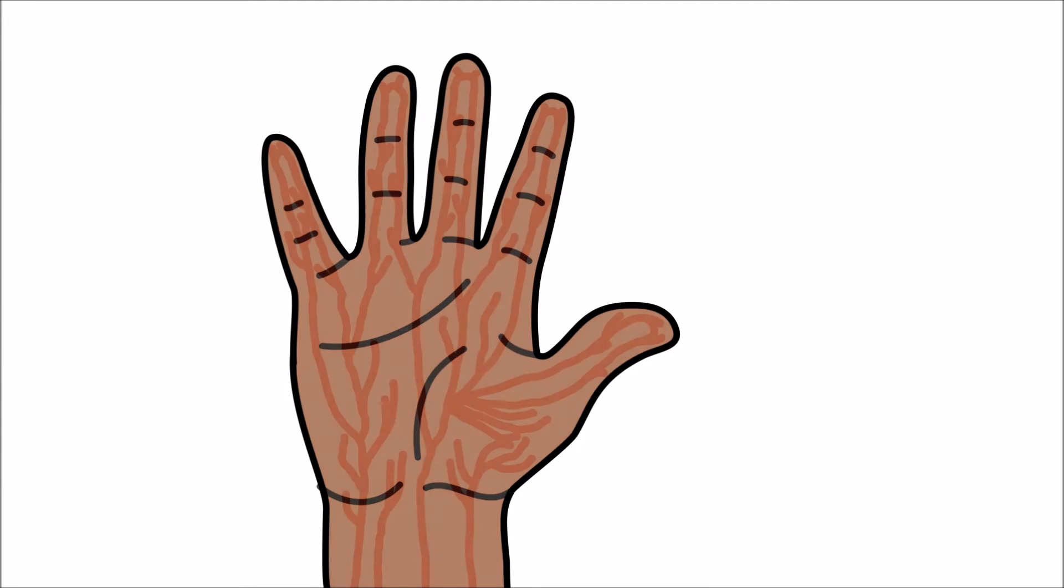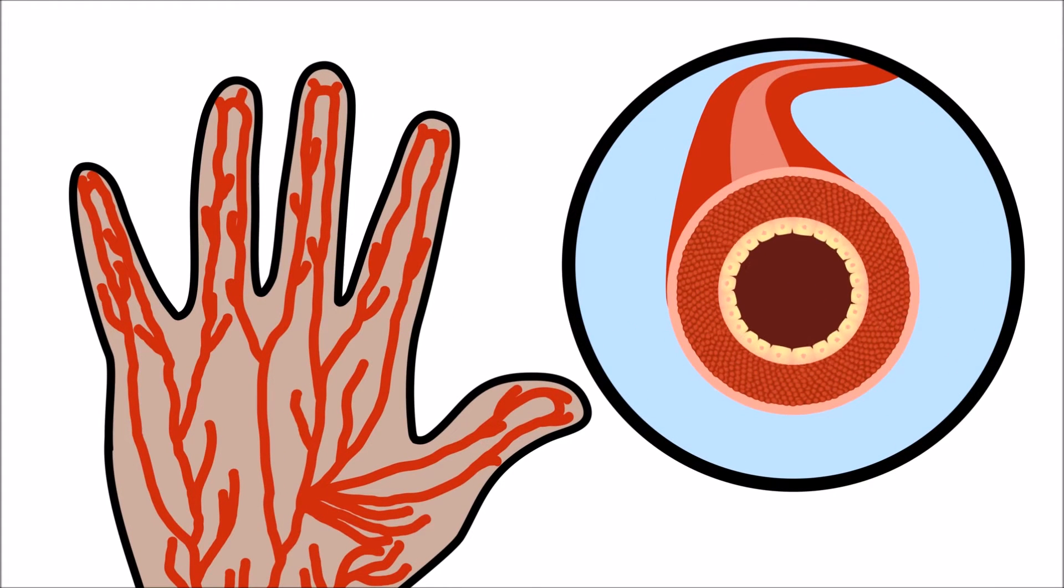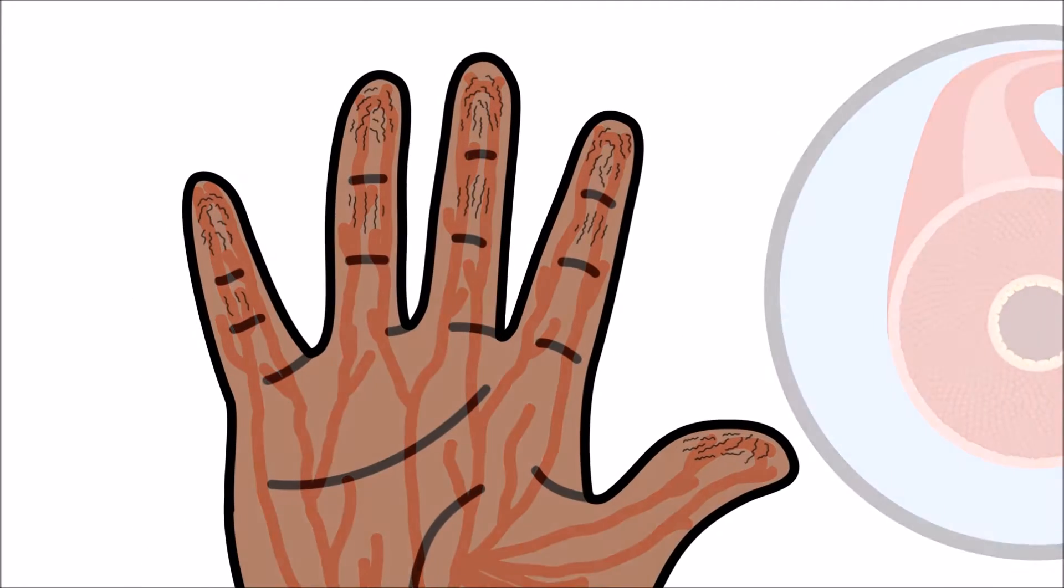Vasoconstriction happens when the blood vessels below the surface of the skin get smaller and smaller. When the blood vessels shrink, our skin wrinkles!